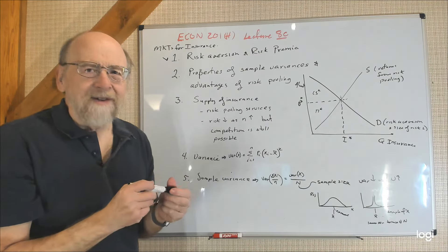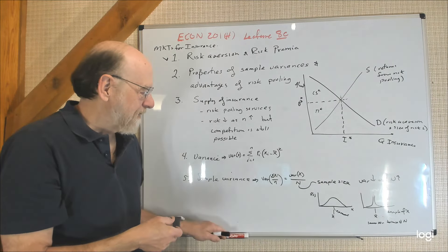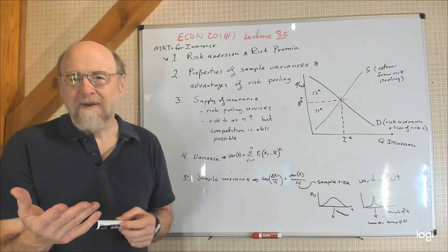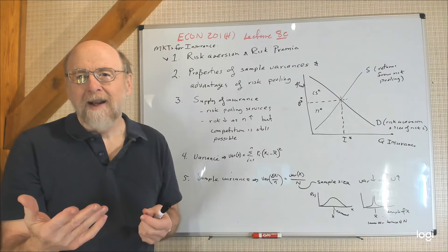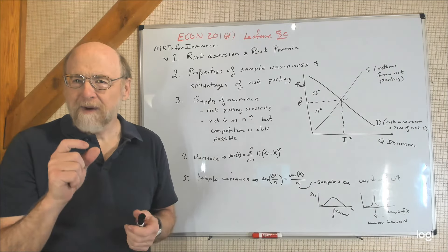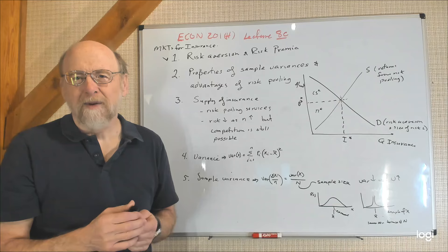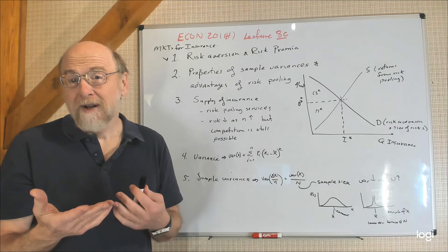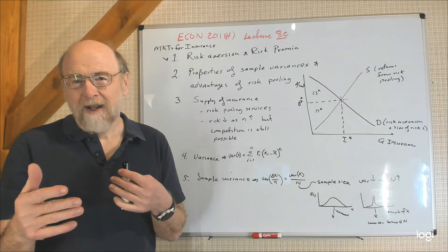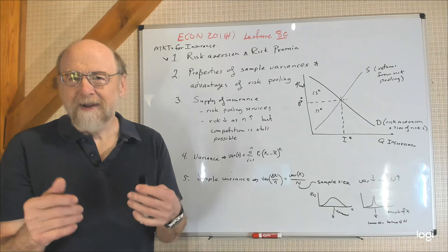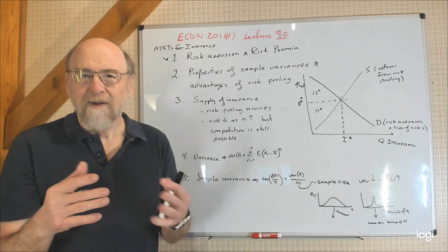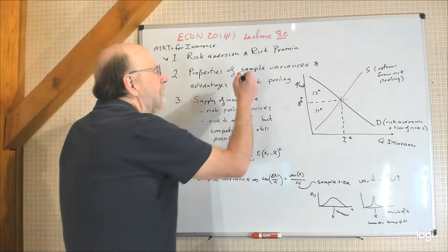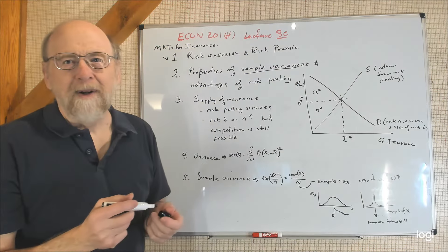There are two reasons why an insurance company might be able to provide their services. One is they may be less risk averse than ordinary consumers and so willing to bear more risk, demanding a smaller risk premium. This is actually a fairly minor reason — it may occur among individuals or family members — but insurance companies mostly benefit from the properties of sample variances.